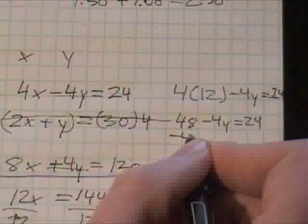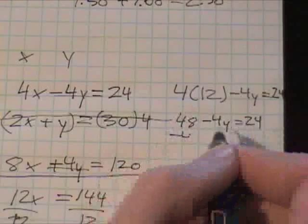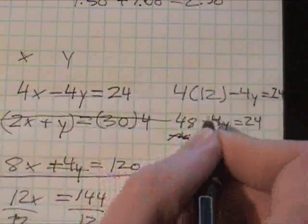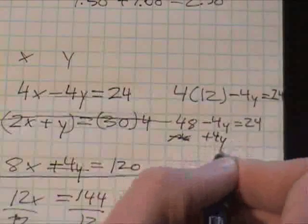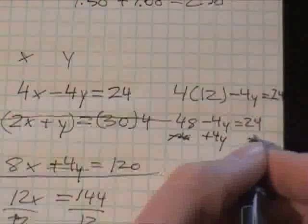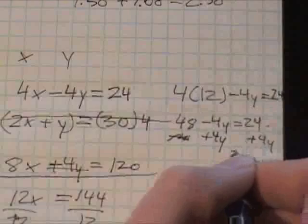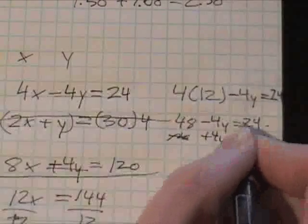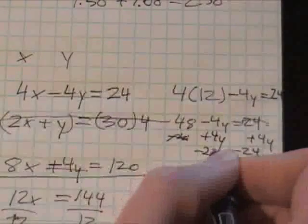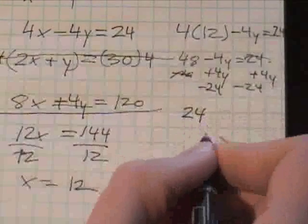So in this case, I think we could subtract 48 over, but we're going to have to get rid of this negative sign anyway. So let's just switch these two on each side. So we're going to add 4y to each side, and we're also going to at the same time subtract 24 from this side and from this side. Why do we do that? Well, it's going to come out real nice and clean here.